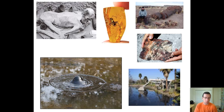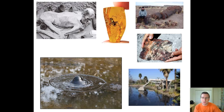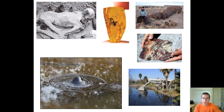Another classic way fossils form is through tar seeps — areas of the surface where oil seeps up. Sometimes animals go toward the water that sits on top of the tar, but then they become trapped inside the tar pit. Eventually they get covered with the tar and are preserved in that way. So a lot of fossils are formed through this process.